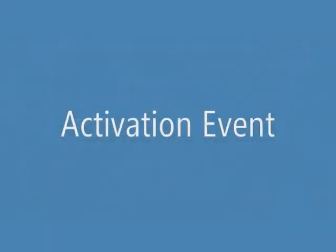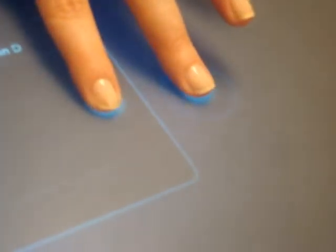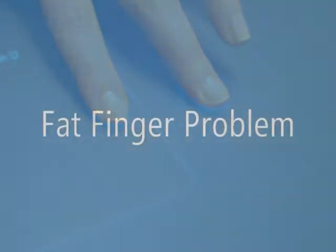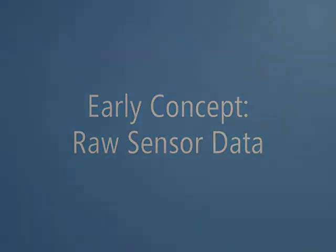Ripples provides different visual effects when contacts successfully capture an element, or when they are touching inactive content such as the background or inactive controls. This addresses the fat finger problem by indicating to users that they have missed their target. Further, the contact visual shrinks to the point used for hit testing, helping the user to learn and become more accurate over time.